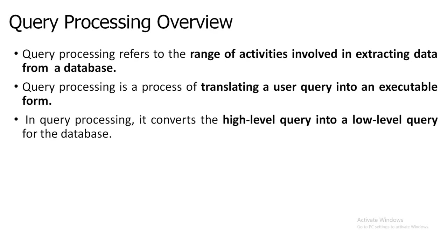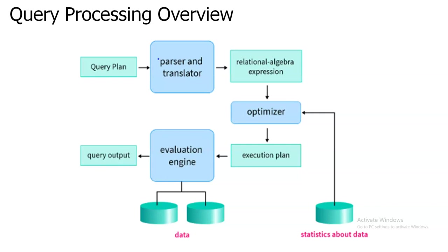Query processing overview covers what happens when you give a query — the data you need is extracted from the database. The high-level query is converted to a low-level query, and the data is derived from the database. Behind this there are certain operations: parser and translator, optimizer, and evaluation engine.